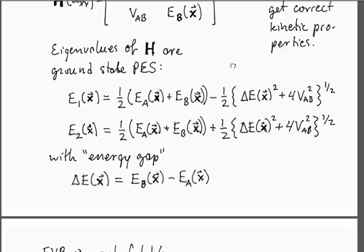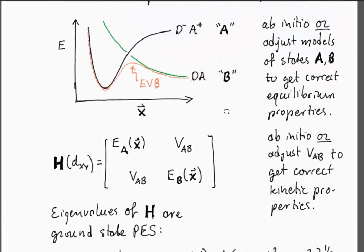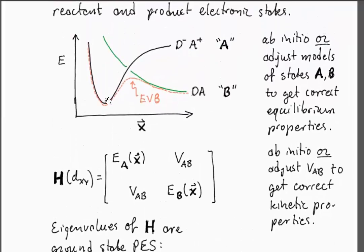The energy gap is the energy of state B minus the energy of state A. If you look back at this diagram, the energy of state B minus the energy of state A is a natural reaction coordinate. When you're over here it's positive, and as you move along this diagram it goes and becomes negative and it crosses through zero right near the transition state location on this ground state surface.